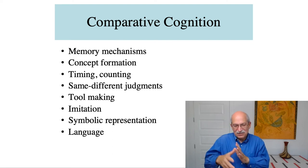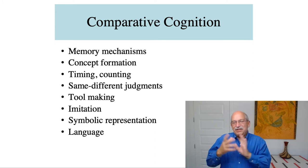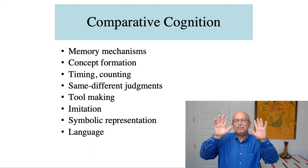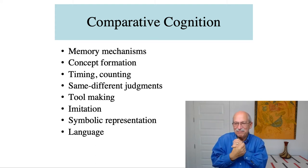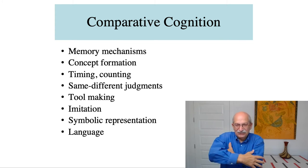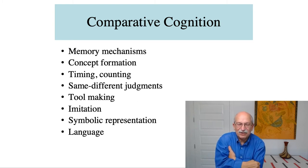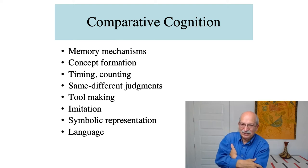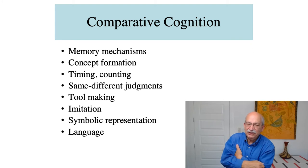Psychologists are studying all kinds of things including memory, concept formation, timing, same-different judgments, tool making, imitation, and symbolic behavior — all sorts. You'd be amazed at the range of things that people study trying to understand the evolution of intelligence, all stemming from the initial work and theoretical arguments of Charles Darwin. So that's the first intellectual root of the study of conditioning and learning.